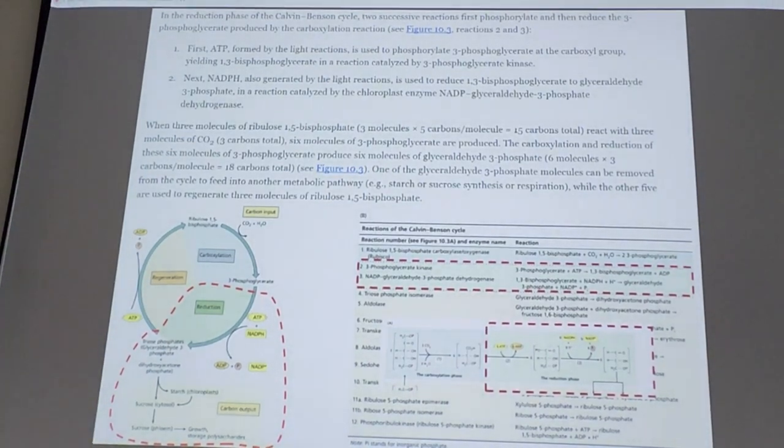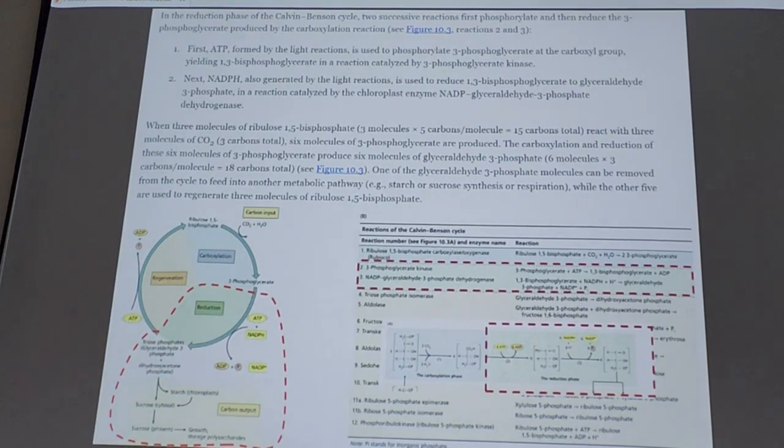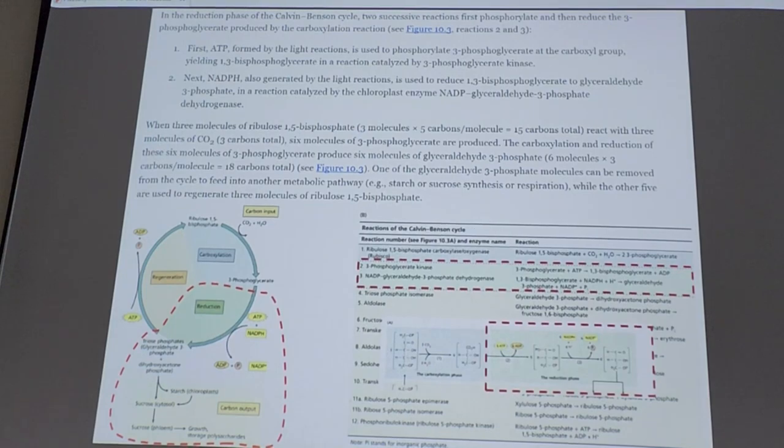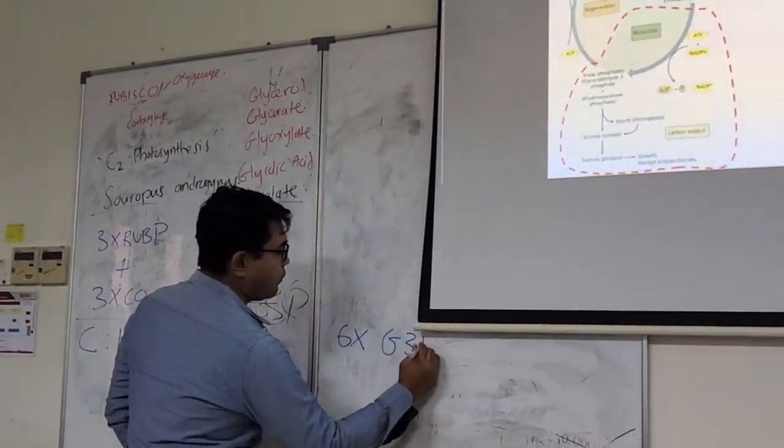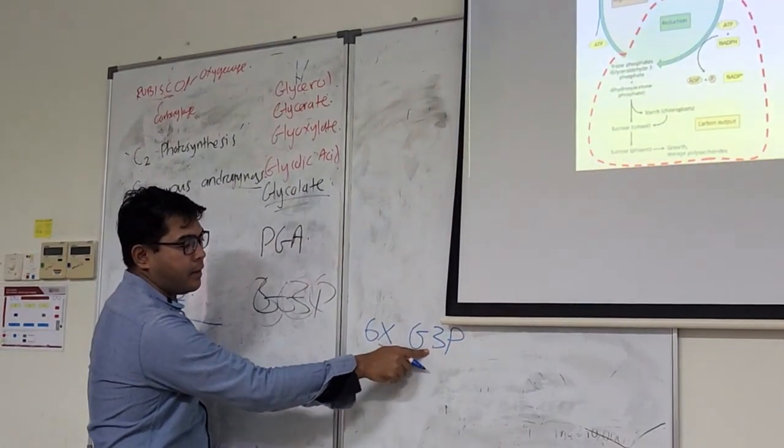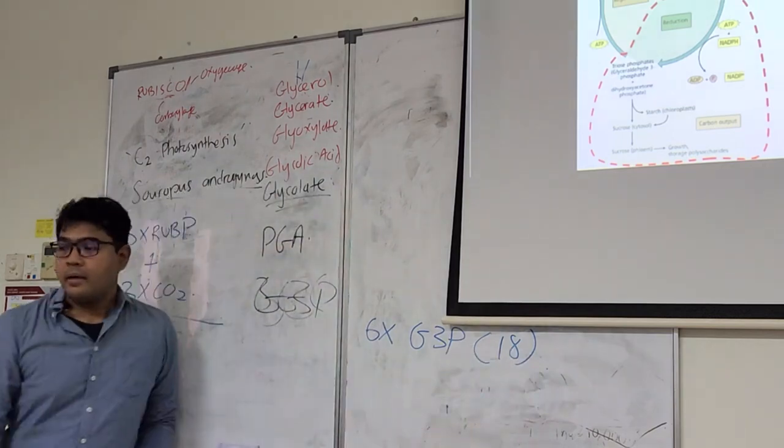So, the reality is, actually, three times RUBP react with three times CO2. So, the total carbon here is 18. 18. When it reaches here, it reaches in the form of six molecules of glyceraldehyde 3-phosphate. This is three carbon. Right? If you times again, the carbon is still 18. 18 carbon.